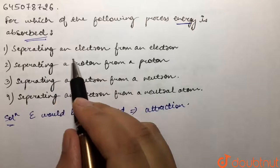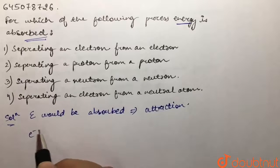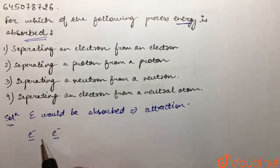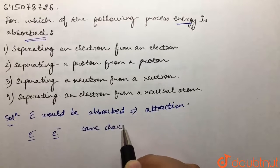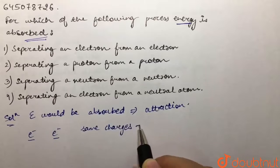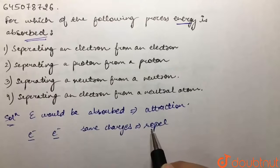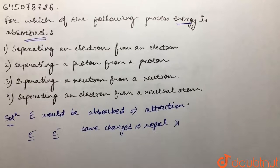The first option says separating an electron from an electron. Now we are taking two electrons — they are of the same charge. Same charges repel each other, so they do not have any force of attraction, instead they have a force of repulsion. So there would be no energy requirement for the separation of two electrons.